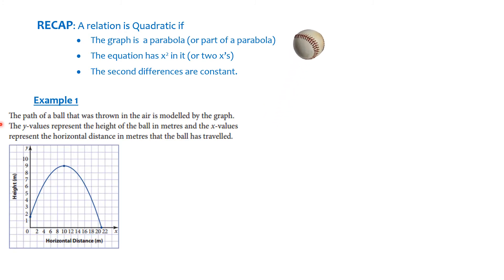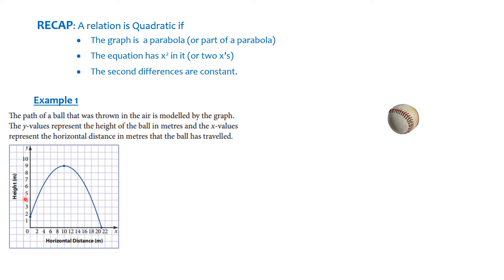Example 1. The path of a ball that was thrown in the air is modeled by the graph below. The y values represent the height of the ball in meters, and the x values represent the horizontal distance in meters that the ball has traveled. So this is the ground down here, and this is the distance the ball is going up, as well as the distance the ball is moving horizontally.